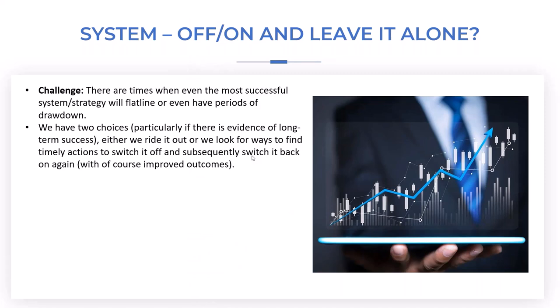There are times where this happens and we've got two choices: look for ways to find timely actions to switch strategies on and off — not just on a whim, not just because we've had three losing trades, but because the market is telling us it's not going to do well for this period. If we can find the right switches we can improve outcomes, not only by reducing loss on a particular strategy and instrument but also by making sure our money is invested in strategies that are working. For example, if there's an inverse relationship between the NASDAQ and the USD, if NASDAQ long isn't doing well, does the US dollar perform well on the same system during that period?